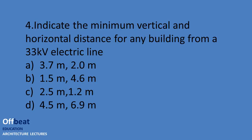Indicate the minimum vertical and horizontal distance for any building from a 33 kV electric line. We have to know that a 33 kV electric line is a high voltage line. The correct answer is: minimum vertical distance is 3.7 meters and minimum horizontal distance is 2 meters.